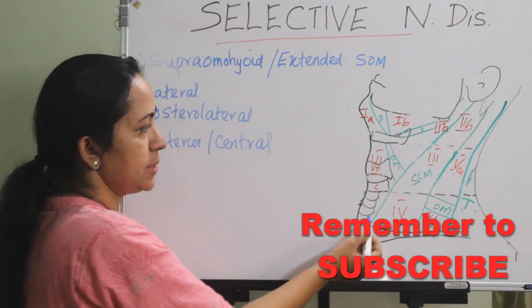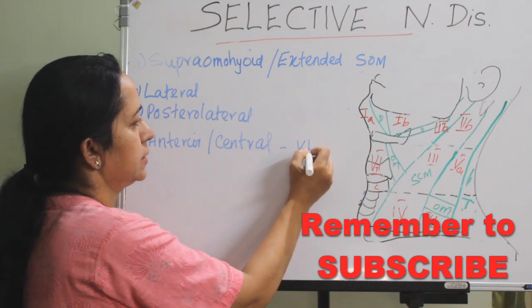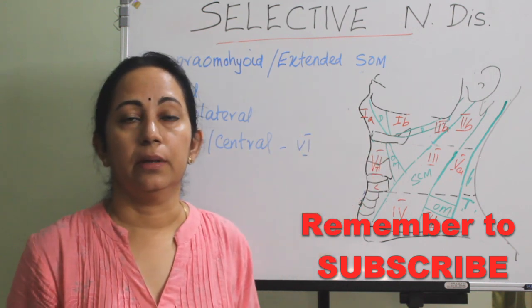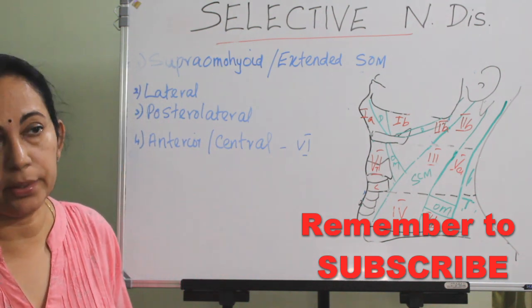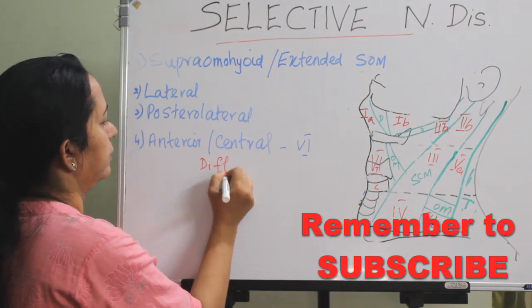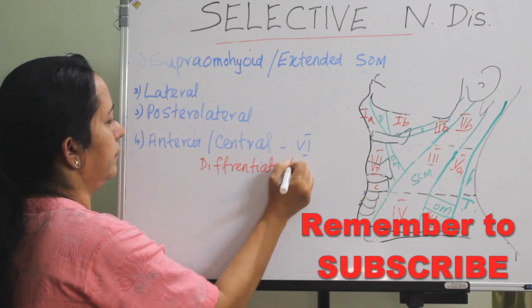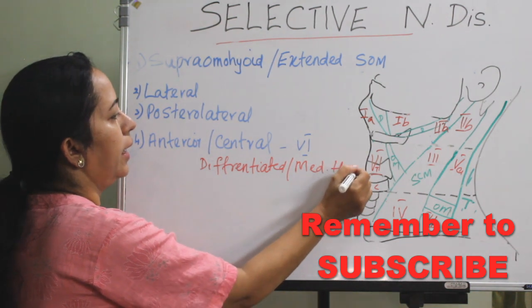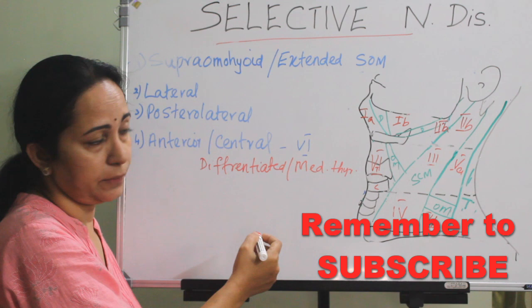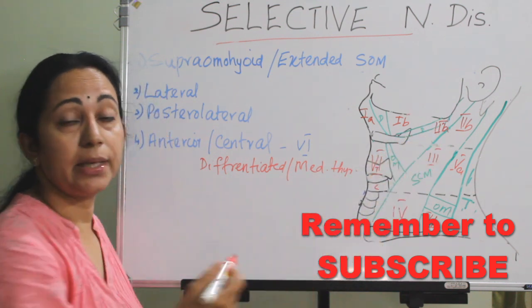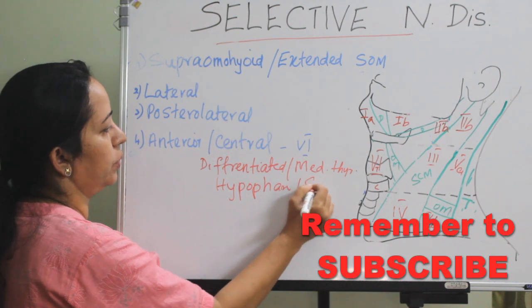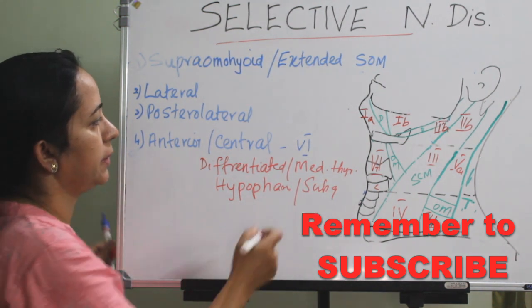The fourth type is the anterior or central compartment dissection, which is level 6. The main structure here is the thyroid gland, so this is performed for differentiated or medullary carcinoma of the thyroid along with total thyroidectomy. It can also be done along with lateral neck dissection (levels 2, 3, and 4) for tumors of the hypopharynx or subglottis.